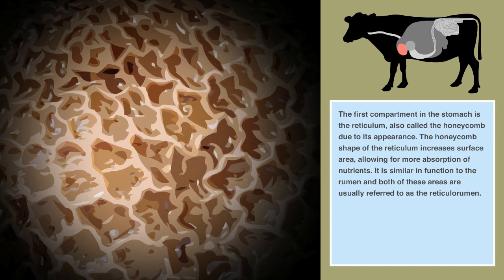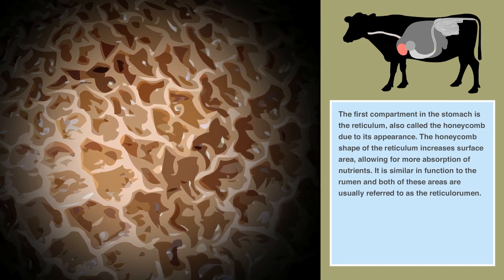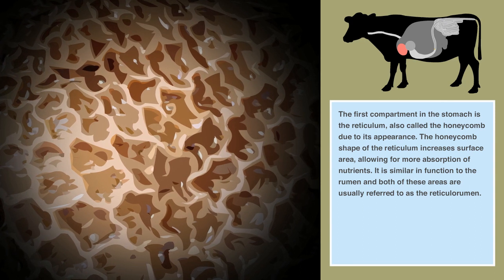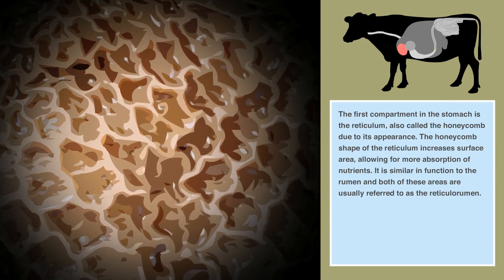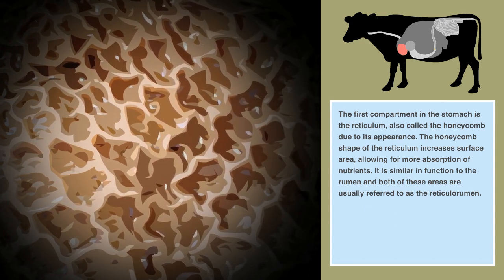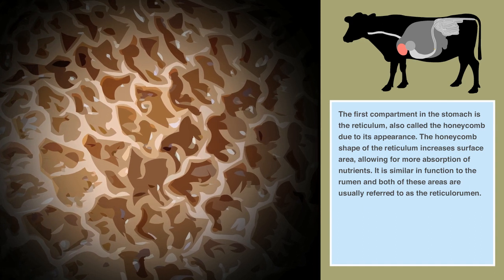The first compartment in the stomach is the reticulum, also called the honeycomb due to its appearance. The honeycomb shape of the reticulum increases surface area, allowing for more absorption of nutrients.